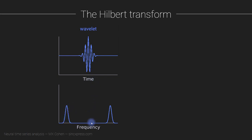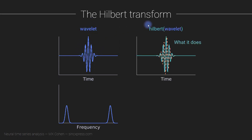Here are the positive frequencies, somewhere around here will be Nyquist, and these are the negative frequencies. Because this is a real-valued signal, the amplitudes get split between the positive and the negative frequencies, giving us this symmetric spectrum. Now what would happen if we take the Hilbert transform of this wavelet? It would look something like this, and you can see that this is actually a complex-valued signal. When you take the Hilbert transform of a real-valued signal, the output is in fact a complex-valued signal — it has a real part and an imaginary part. The real part is in green, the imaginary part is an orange dashed line.